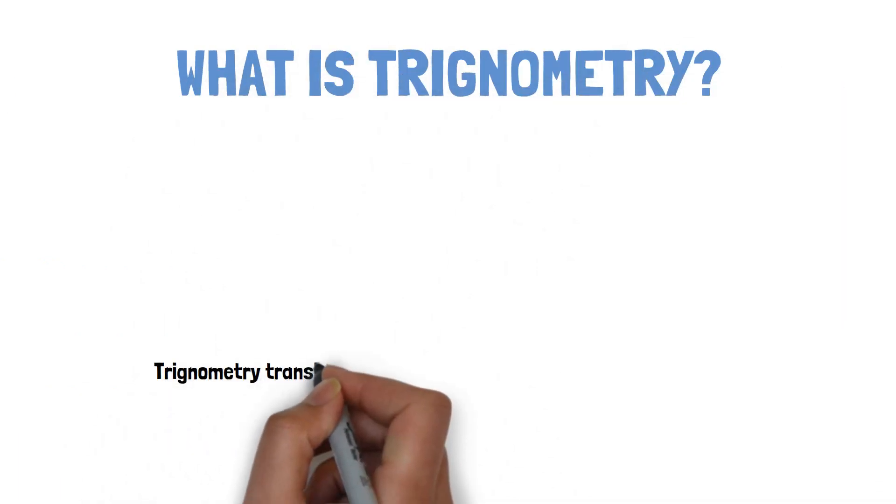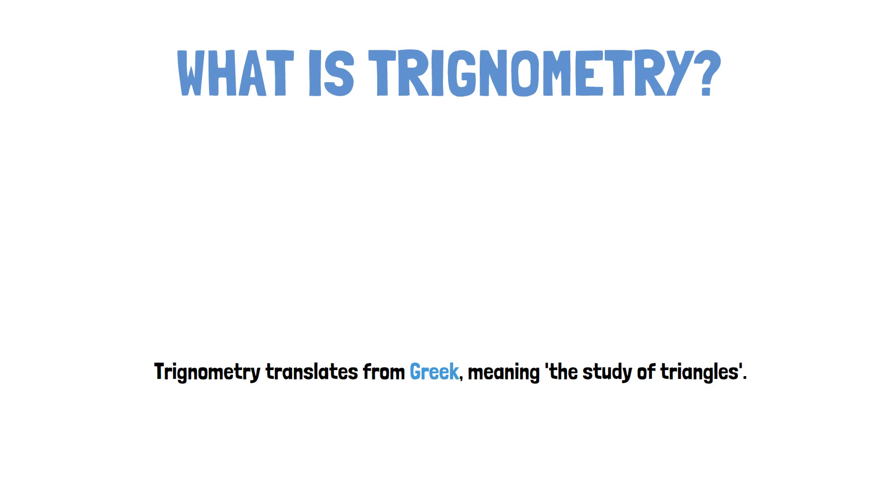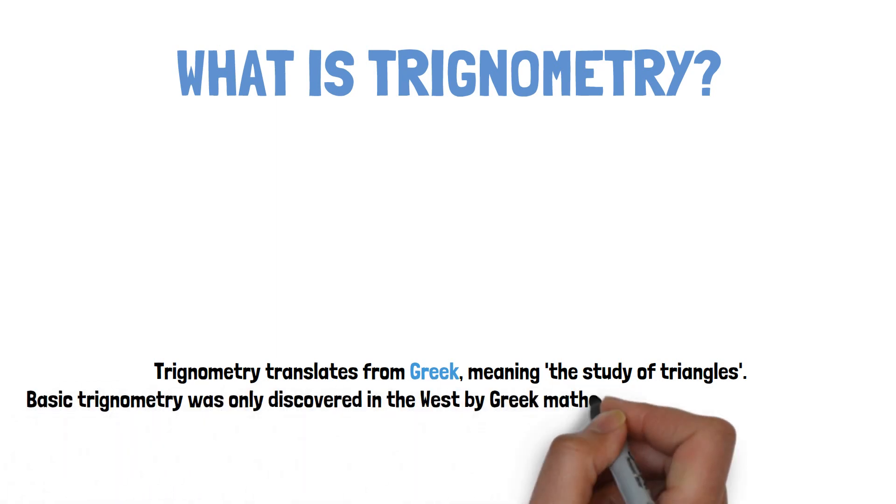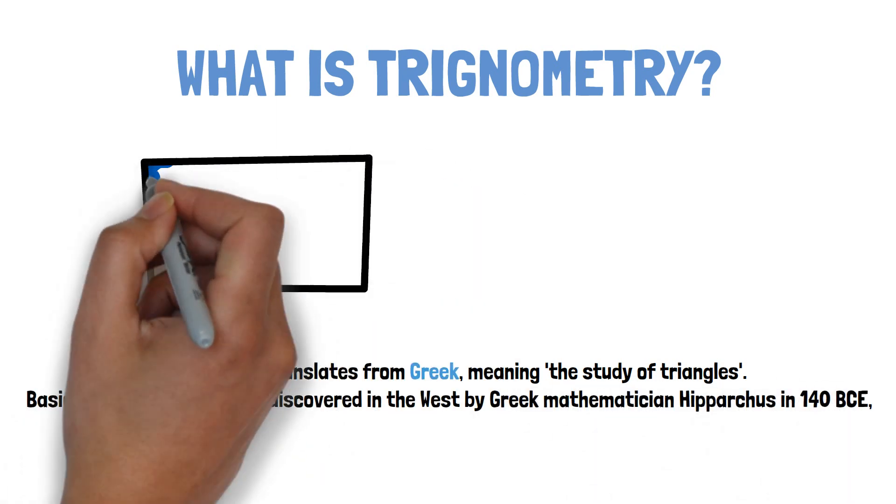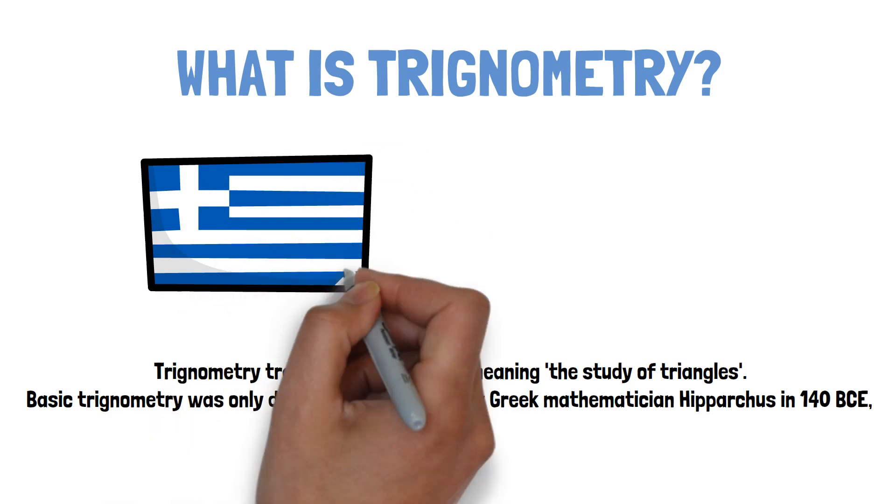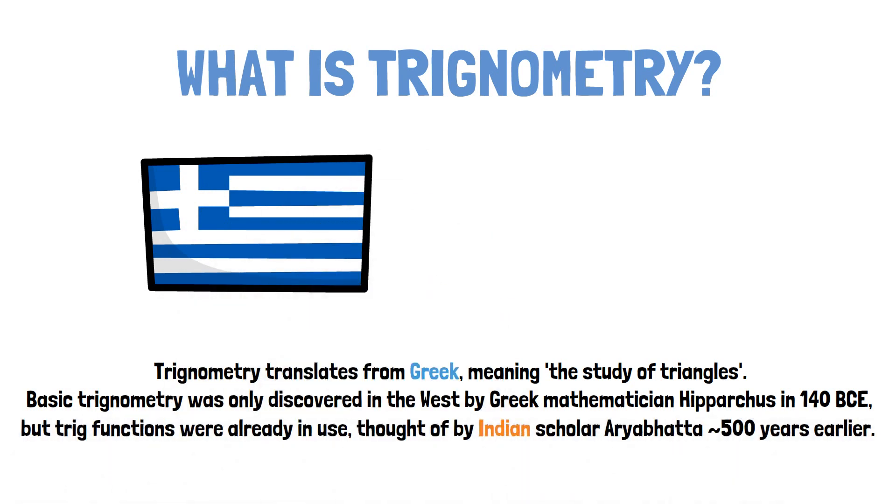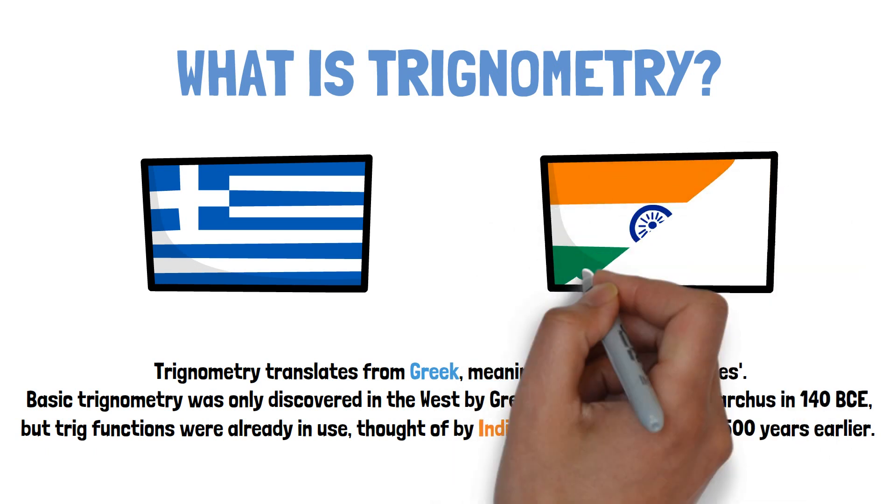We're going to learn about sine, cosine, and tangent. What is trigonometry? Trigonometry translates from Greek, meaning 'the study of triangles.' Basic trigonometry was only discovered in the West by Greek mathematician Hipparchus in 140 BCE, although trig functions were already in use, taught by Indian scholar Aryabhata 500 years earlier.